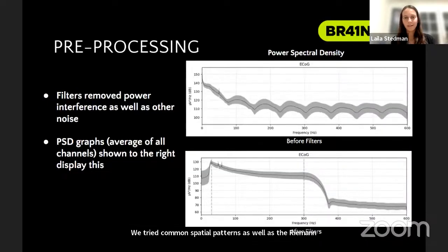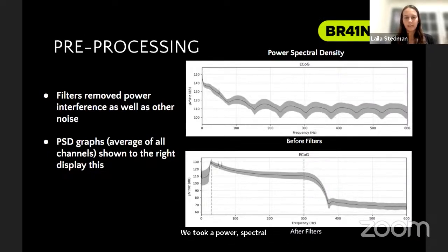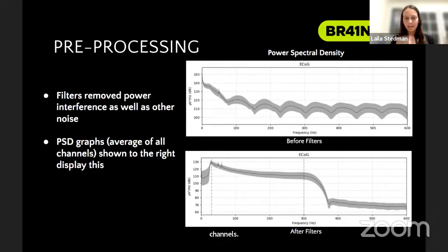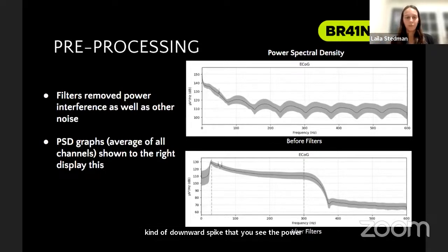We took a power spectral density graph right before we applied the filters as well as after. As you can see, it's an average of all of our channels. This was really reassuring during the process because we were able to visually see that the downward spike — the power interference as well as other noise — was cleaned up through those filterings.